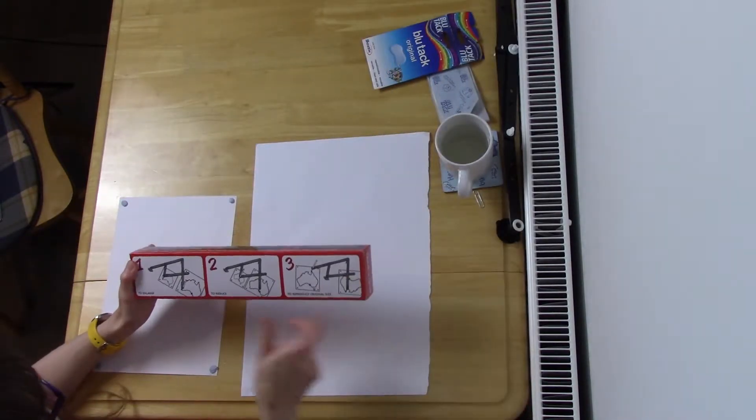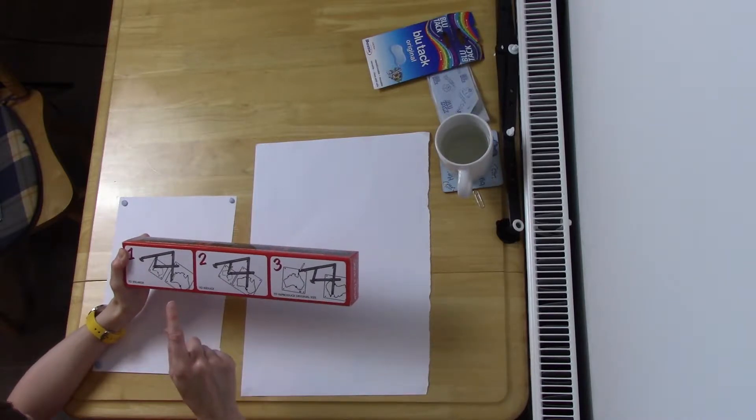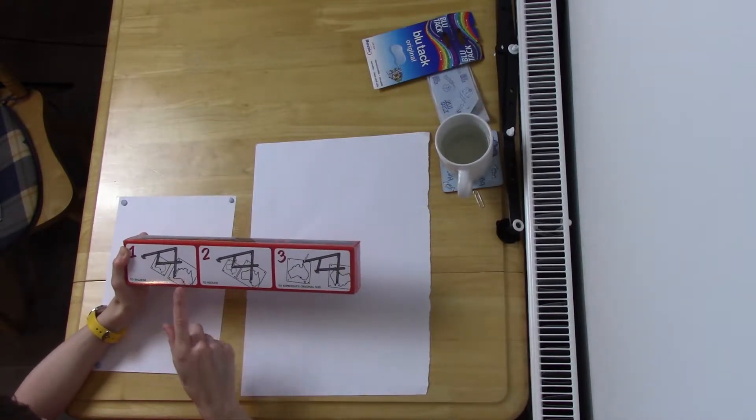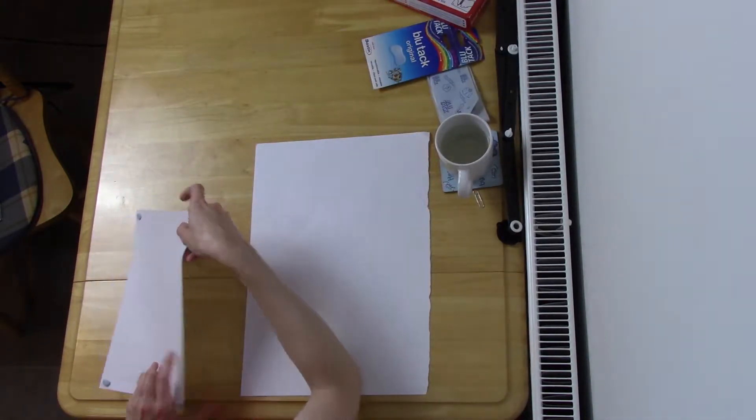Just going to check the position so to enlarge you have the original on the left hand side and the piece of paper you want to copy onto on the right hand side so it looks like it's on an angle but I don't know if that matters.